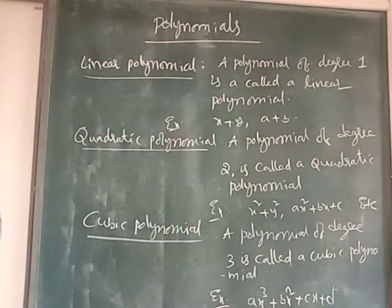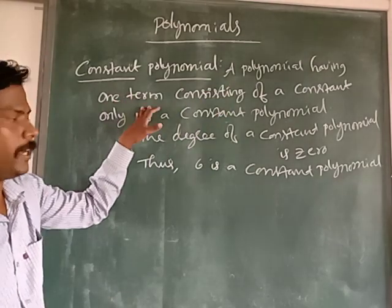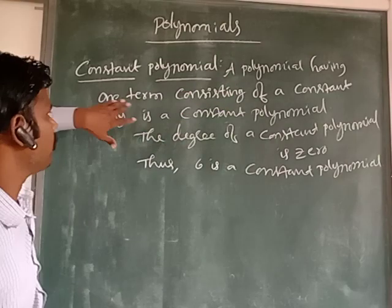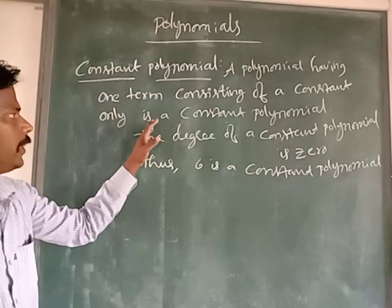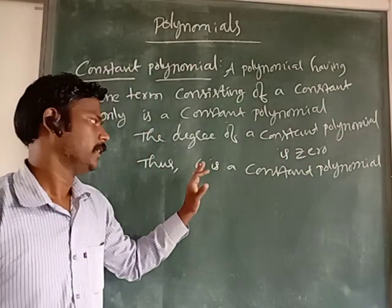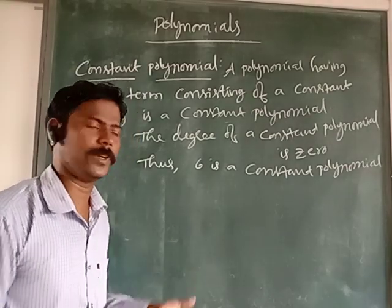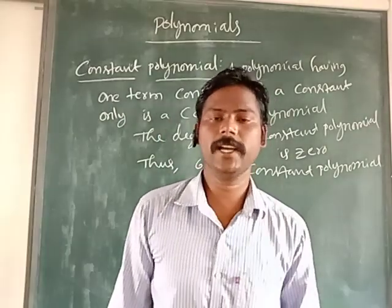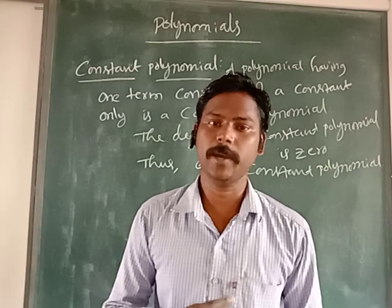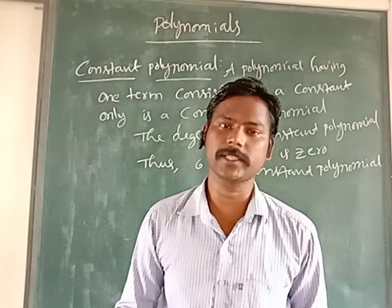Please look at the board and note it down. Next, we see the constant polynomial. A polynomial consisting of a constant only is a constant polynomial. The degree of a constant polynomial is 0. For example, the number 6 alone is a constant polynomial — there is no variable added to it. Any separate number — 1, 2, 3, 4, 5 — is a constant polynomial.